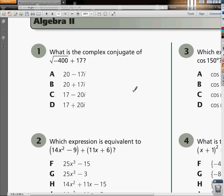All right, let's start by taking a look at practice EOC question number one. It says, what is the complex conjugate of the square root of negative 400 plus 17?